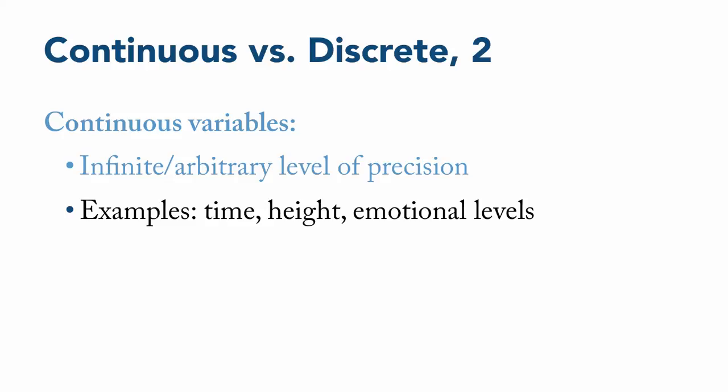A continuous quantitative variable can be measured to an infinite or arbitrary level of precision. That is, you can have as many decimal places as you want. Examples of this include time, which can be measured to seconds or tenths of seconds or thousandths of seconds and so on, as well as height or even emotional levels.